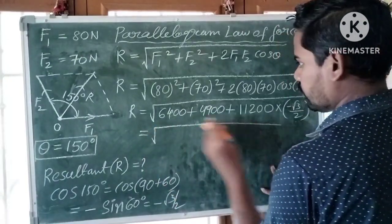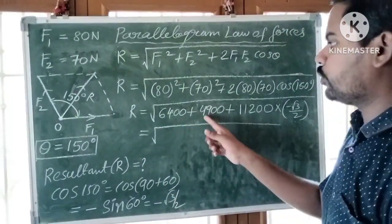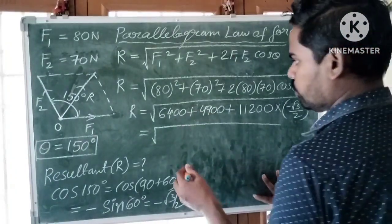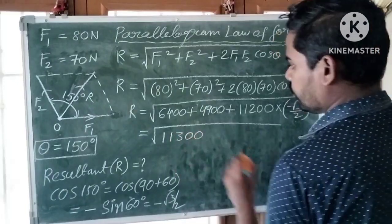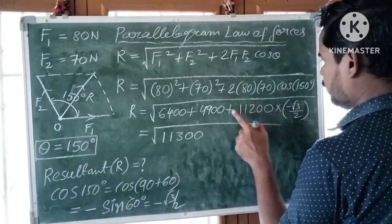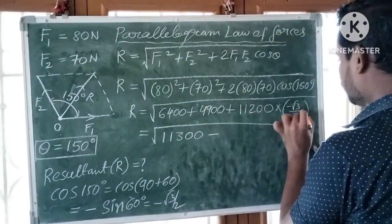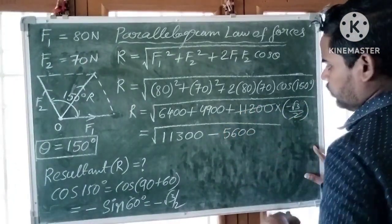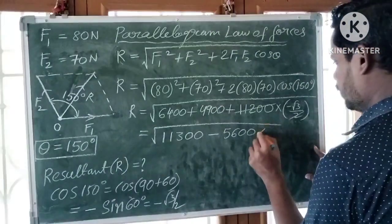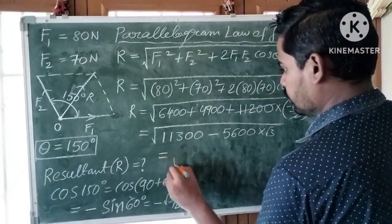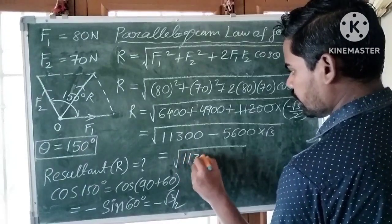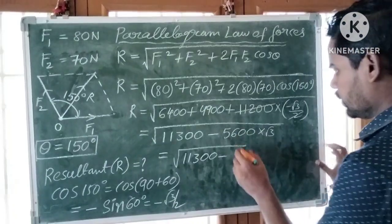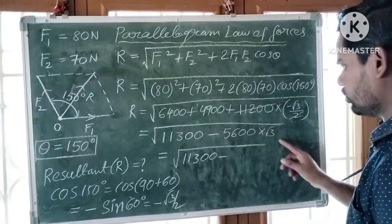Root over 6,400 plus 4,900, you will get 11,300 plus 11,200 minus root 3. Is equal to root over 11,300 minus 5,600 into root 3.